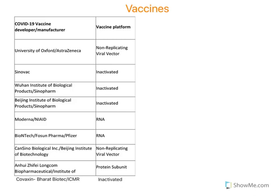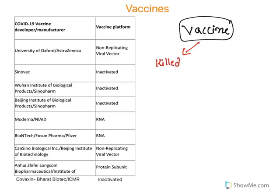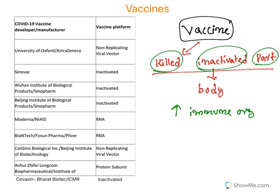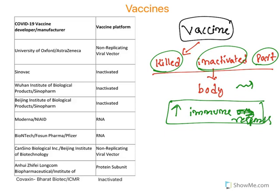Now let us discuss vaccines. Vaccines work by taking the organism causing infection and either killing it, inactivating it, or using a particular part of that organism, which is then introduced into the human body. Once introduced, the human body mounts an immune response to that organism. Because the organism is killed, inactivated, or only a part is used, it will not cause a full-blown infection, but the body develops a full-blown immune response. This is how all vaccines work.